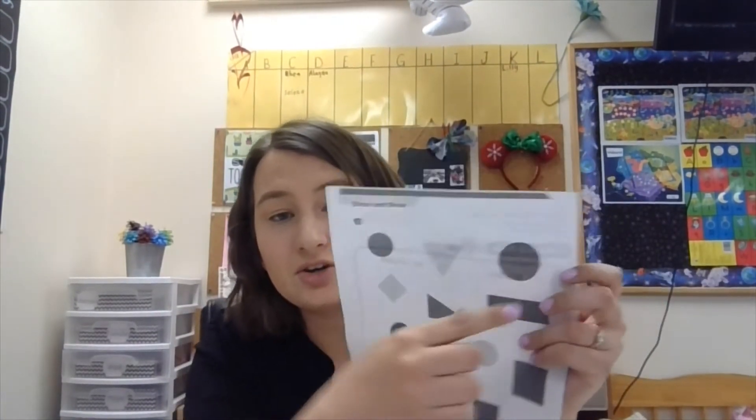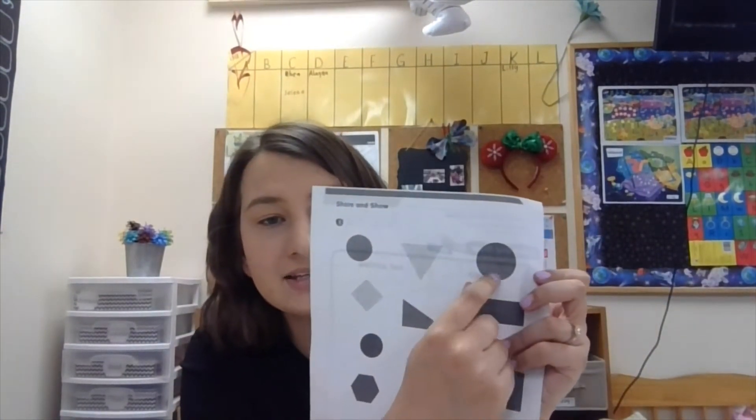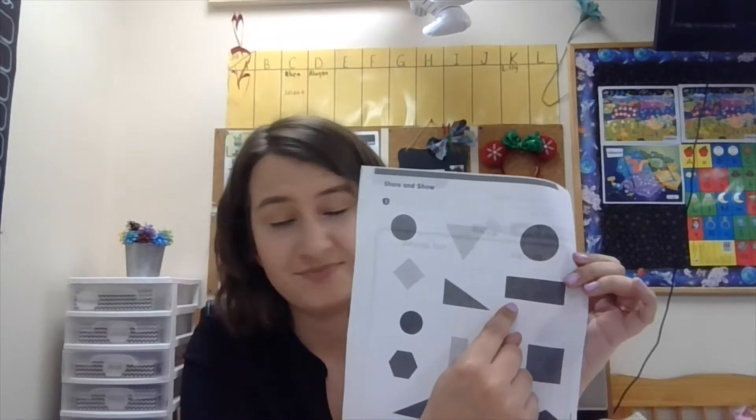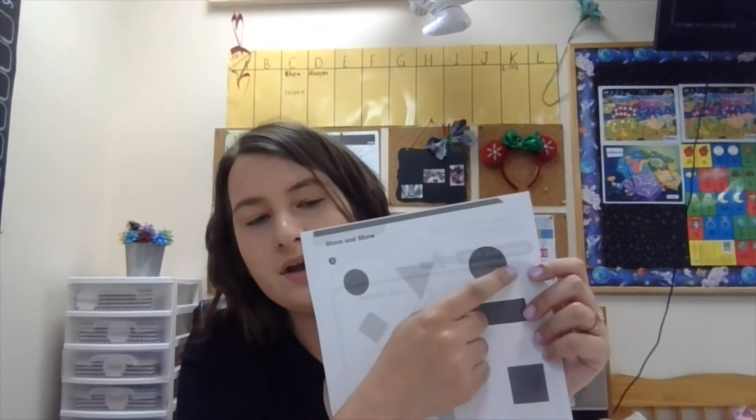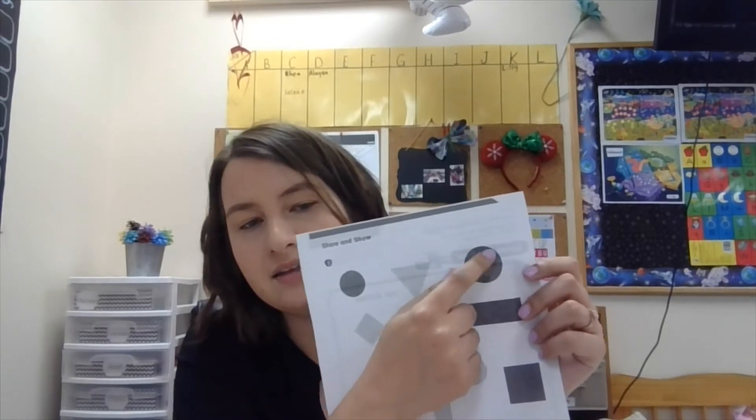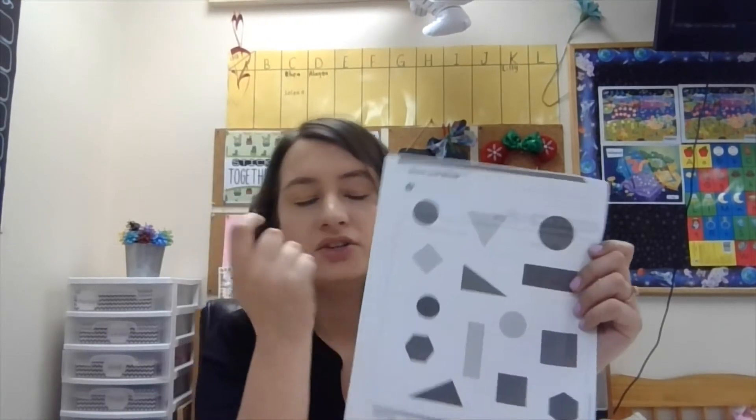On that page you're going to mark an X on all of the circles. So what is a circle? This is a circle. Is it a circle? No. Circles have to go all the way around like this. So go ahead and mark an X on all the circles and then we're going to move on to the next one.